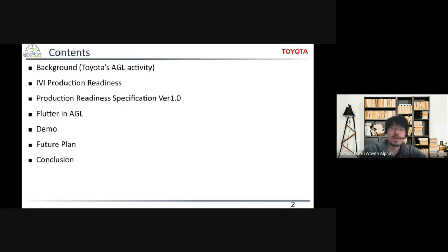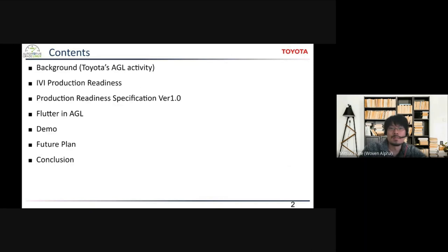This presentation has seven sections. I'll start with the background and Toyota's activity in AGL, then talk about production readiness — the activity to fill the gap between current AGL and IVI products in the market. Then I'll introduce the specification for production readiness. After that, I'll hand over to Chris, who presents Flutter in AGL with some demo videos. Finally, I'll wrap up with the future plan and conclusion.